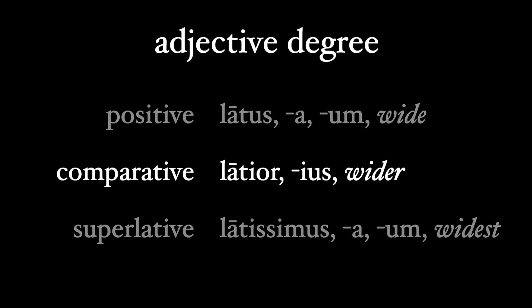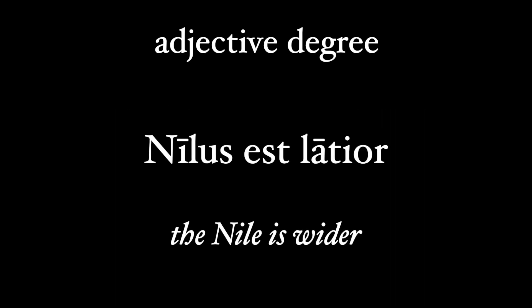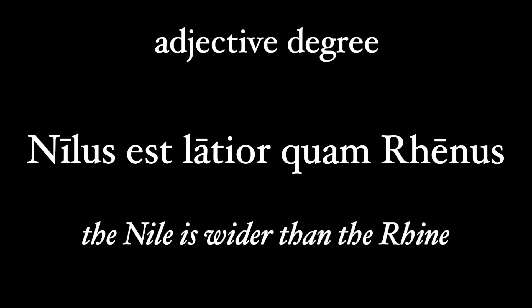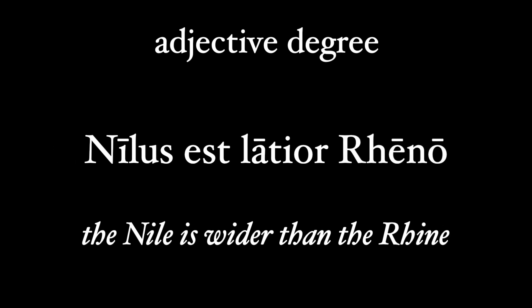Then we have the superlative 'latissimus' meaning widest or very wide. When we use the comparative 'latior' we're setting up a comparison between two different objects. Say we want to compare the width of the Nile river to that of the Rhine: we would say 'Nilus est latior'. Now we have two options for 'than the Rhine': we could use 'quam Rhenus' or just put 'Rhenus' into the ablative case, 'Rheno'. Both of these mean 'than the Rhine'.